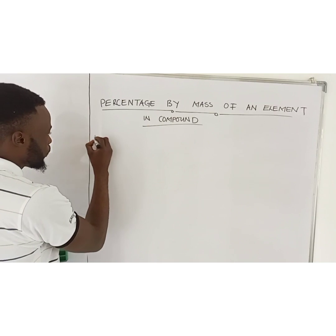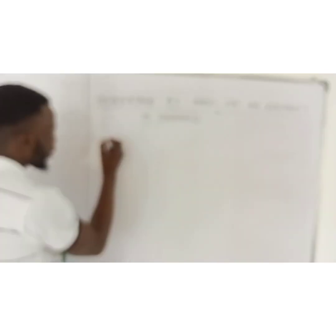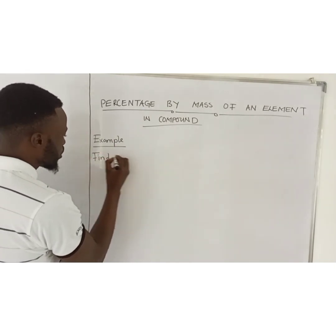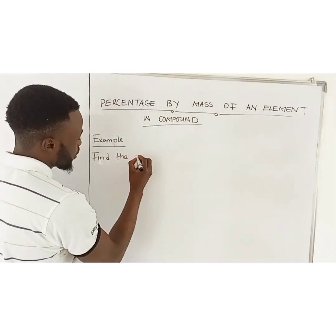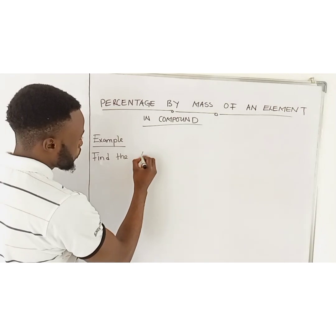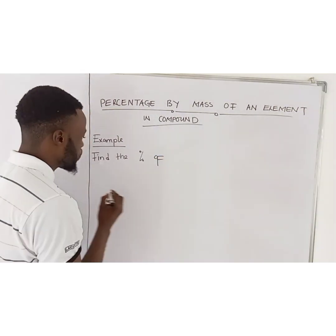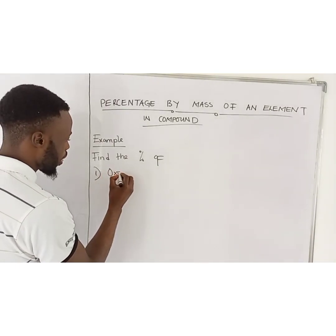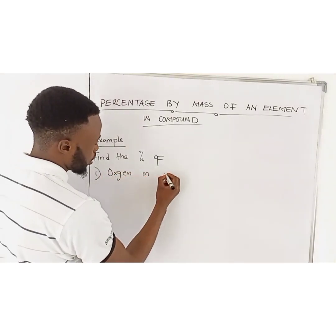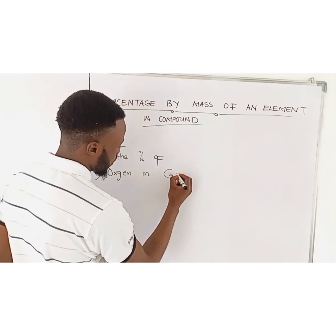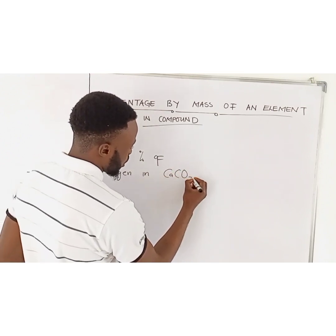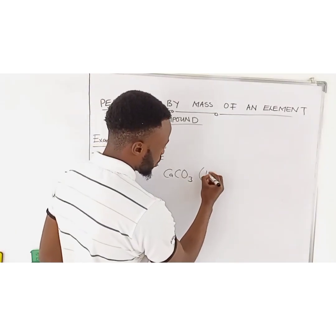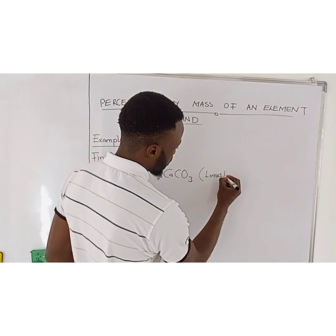Example. Find the percentage of oxygen in calcium carbonate. Calcium carbonate — the industrial name for calcium carbonate is limestone.